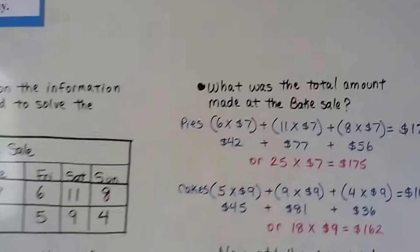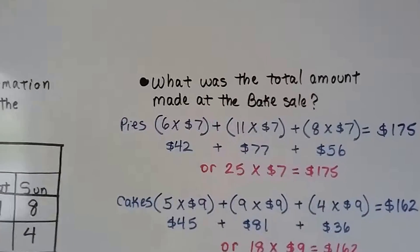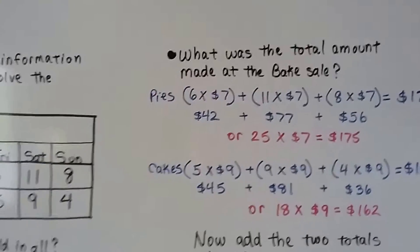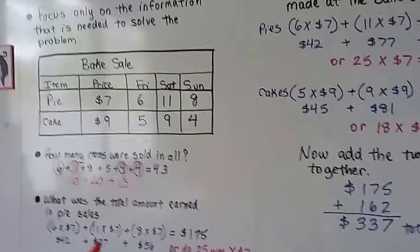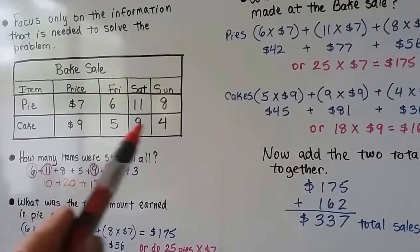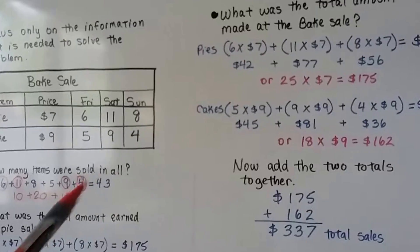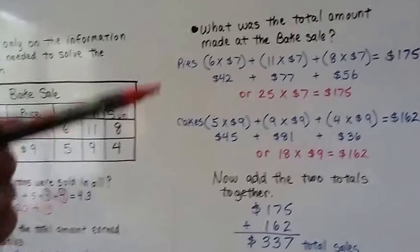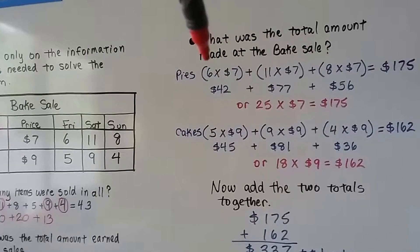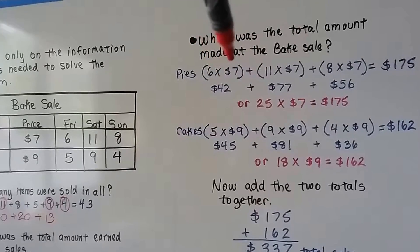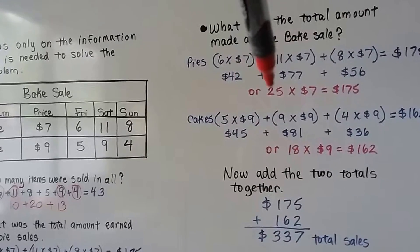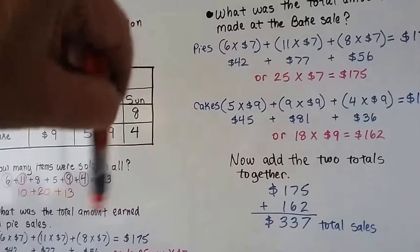What was the total amount made at the bake sale? Now we need to find out the total amount of money. If this is part two of a question you already answered, one part that we know pies are $175, we can just go straight into solving for the cakes. Otherwise, if this is just a question by itself, we would find the total of the pies, six on Friday at $7, 11 on Saturday for $7, and eight on Sunday for $7. Or, we could do the 25 times seven, like we talked about here.